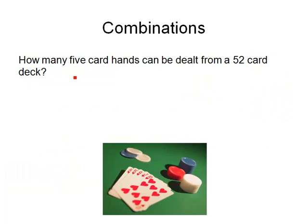Another place we see combinations is when we talk about poker hands. How many 5-card hands can be dealt from a 52-card deck? The order in which the cards are in your hand makes absolutely no difference. For example, Ace, King, Queen, Jack, 10 of Hearts is a Royal Flush in Hearts — and even if the cards were in a different order, it would still be a Royal Flush in Hearts. I want to know how many different 5-card hands there are, of which this is one.